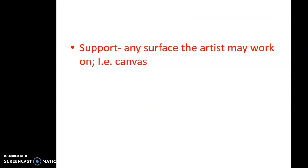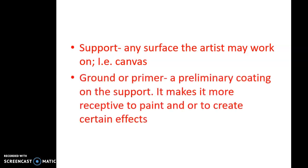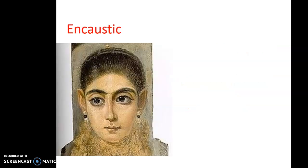Support is any surface that the artist may work on — canvas, paper, plaster, flesh, whatever that support is. Ground and primer is the preliminary coating on the support. It makes it more receptive to the paint and helps create certain effects. Think of it like painting in your home — normally you have to prime the walls before you put on the paint, so that the paint adheres to it.